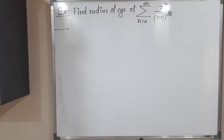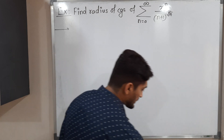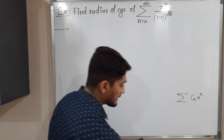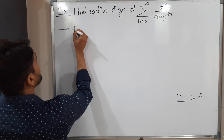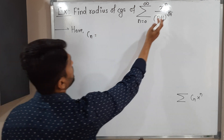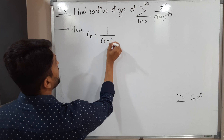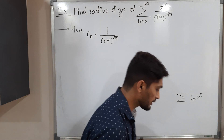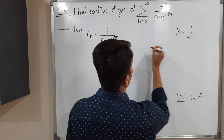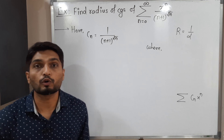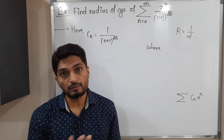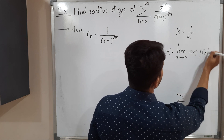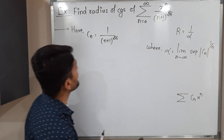Now this is the second example. Again we have to find the radius of convergence. Let us compare this power series with its standard form C_n x^n. Here C_n, the multiple of x^n, is 1 / (n+1)^(√n). This time I am using the formula alpha = lim sup as n → ∞ of |C_n|^(1/n) to find alpha.